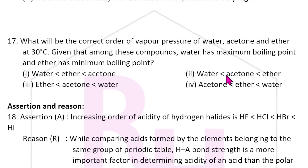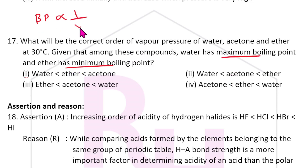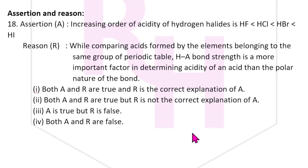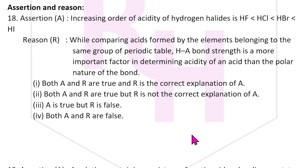Seventeenth question: What is the correct order of vapor pressure of water, acetone, and ether at 30°C? Among these compounds, water has the maximum boiling point and ether has the minimum boiling point. Since boiling point and vapor pressure are inversely proportional, water has the least vapor pressure and ether has the most. The answer is the second option.